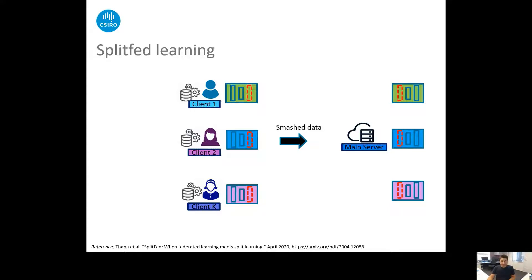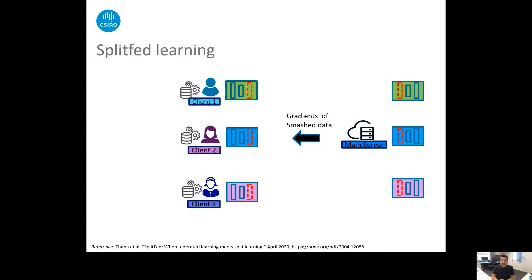Then they send this smashed data to the main server. After receiving this smashed data from the clients, the main server starts forward propagation on the server side model separately for each client. So we can assume this can happen in parallel, but in our implementation we did it by multi-threaded programming. Then in the backpropagation, the gradients of the smashed data are transmitted back to the clients. Upon receiving the gradients of the smashed data, each client performs the backpropagation and this completes one forward backward propagation and we say it's one global epoch if all the local data are considered.